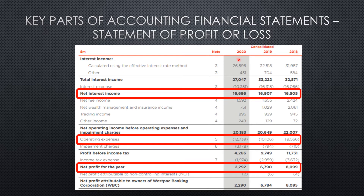Looking at this statement of profit or loss, you can see the years at the top — 2018, 2019, and 2020 — these are called comparative years. In the exam you'll get two comparative years, and the column beside them will show a percentage indicating how much that account has gone up or down from the previous year. For example, comparing interest income from 2019 and 2020, the income decreased by $211 million — from $16.907 million to $16.696 million — a drop of 1.24%. You won't have to calculate the percentages; they'll be given to you.